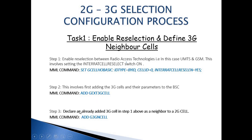Thirdly, we would need to declare neighboring cells for each 2G cell. The neighboring cells are typically 3G cells that are around the 2G cell, or the 3G cells that it can hand over to. This can sometimes be in the same site or the same location. In order to do this, we run the command ADD 3G NEIGHBORING CELLS.